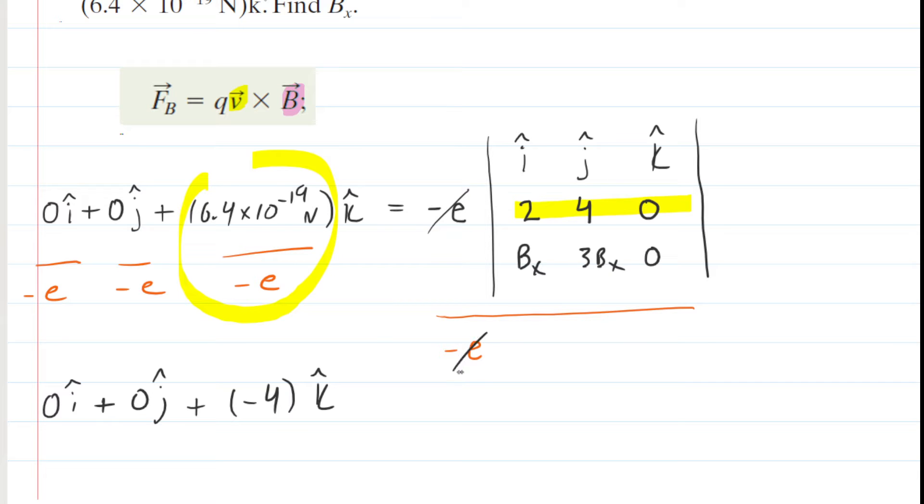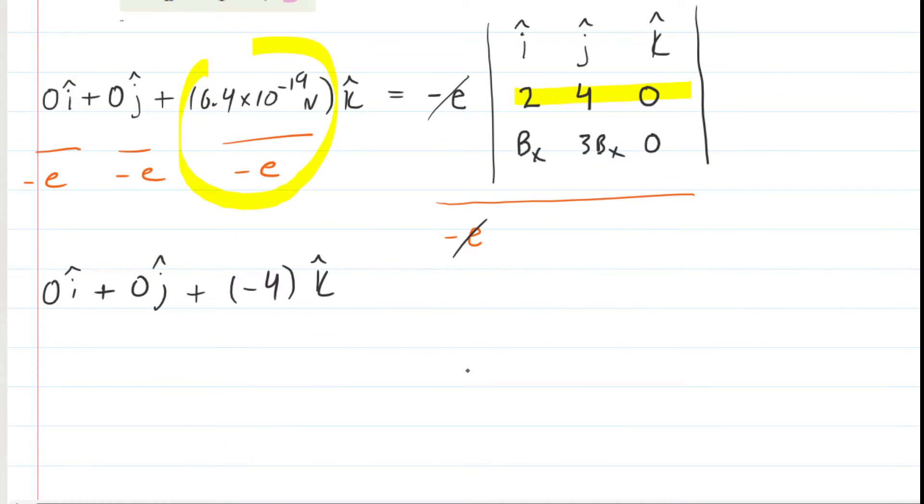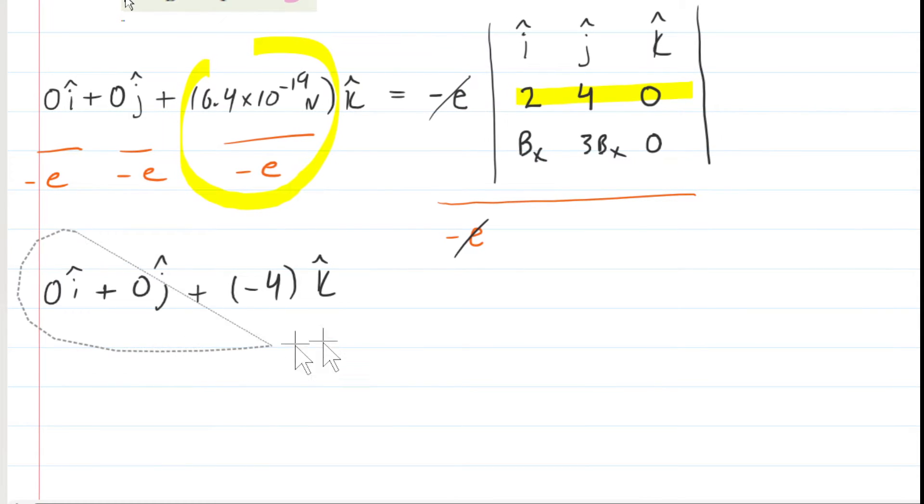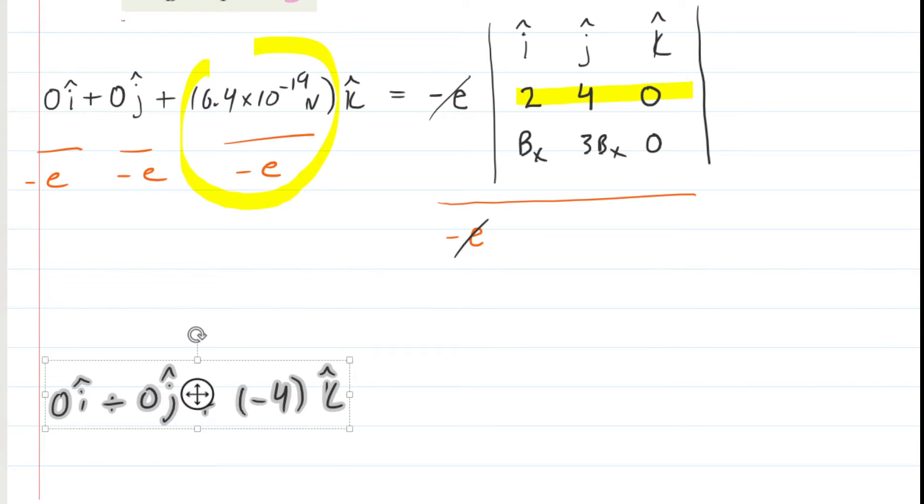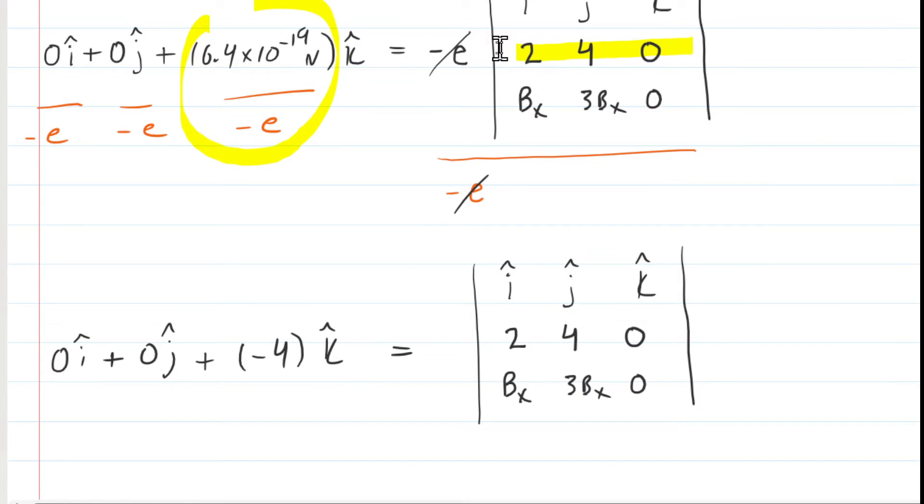So we would have negative 4 k-hat right there. And then on the right-hand side, these negative e's cancel. So why don't we rewrite the contents of that absolute value, which is going to be the cross-product.